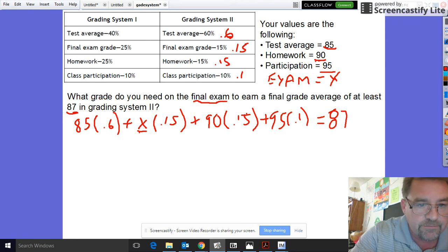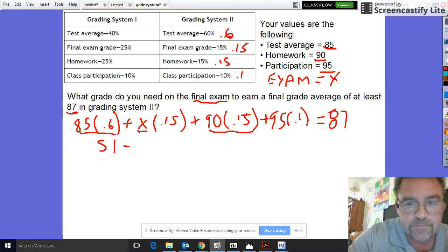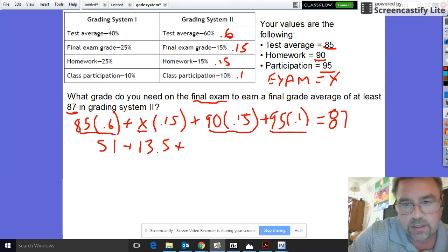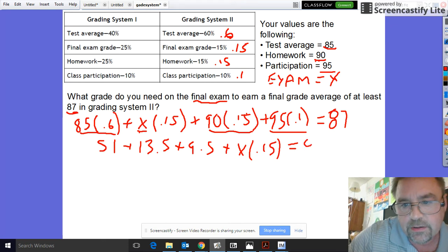Multiply this out. I'm going to do all these whole numbers first, so 85 times 0.6 was 51, and then I'm going to do this one which is 90 times 0.15 which is 13.5, plus 9.5 plus your variable that you still don't know times 0.15.